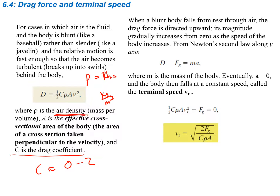When a blunt body falls from rest through the air, the drag force is directed upward. You have mg going down, motion is downward, and so the drag force acts upward. The magnitude of drag gradually increases from zero as the speed of the body increases. Looking at the drag equation, the velocity term changes while everything else stays constant, so as velocity increases, the drag force increases, which lowers the amount of acceleration.